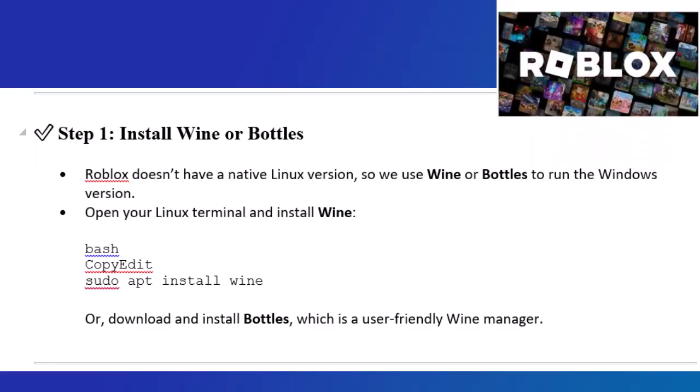Step 1: Install Wine or Bottles. Roblox doesn't have a native Linux version, so we use Wine or Bottles to run the Windows version. Open your Linux terminal and install Wine.